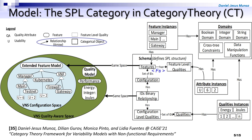Nevertheless, for what we are going to present next, keep in mind that the features are the FS object, the configurations are the complete configuration object CCS, the set of quality attributes is the QQAS object for the configuration-level qualities, and the quality measure configuration is the binary relationship object QMC.